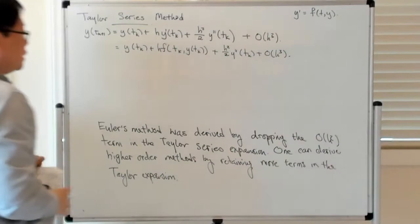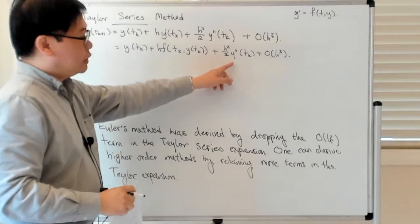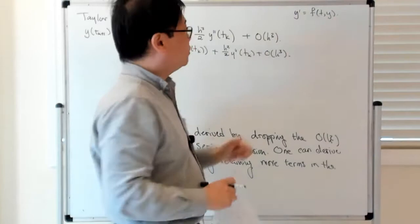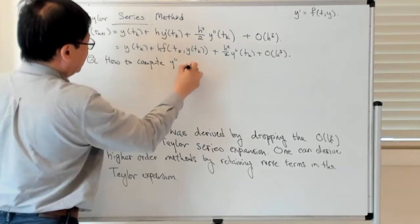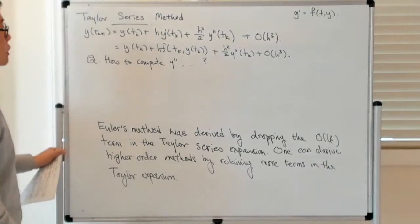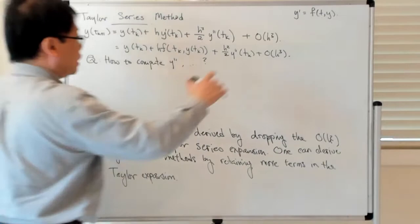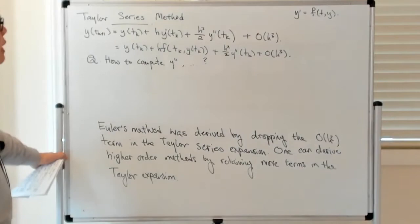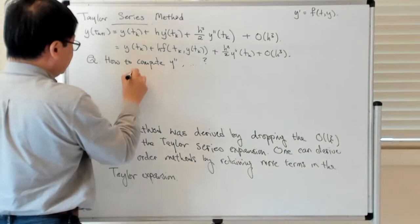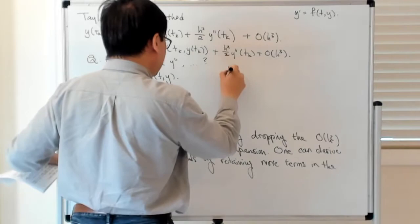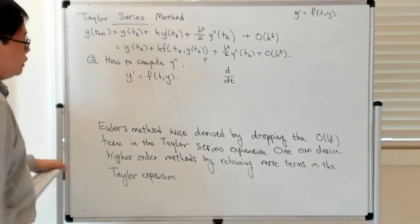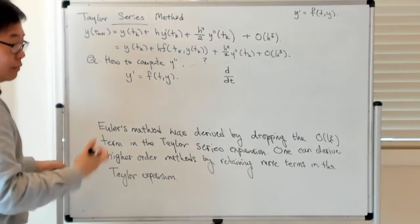Now there's a slight problem: you don't have an explicit expression for y, so you can't just differentiate it twice. The only information you have about y comes from the differential equation itself. The question is how to compute y double prime and the higher derivatives as well. The two pieces of information you have are the differential equation which y satisfies and the initial data. To compute y double prime, you have to take y prime equals f of t, y and then implicitly differentiate this.